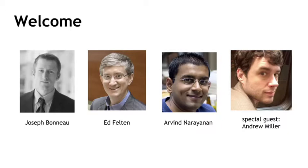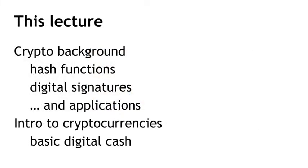There will be 11 lectures in total. In this lecture, number one, we're going to do two things. First, we'll introduce some cryptographic primitives that turn out to be necessary for talking about cryptocurrencies. In particular, we'll talk about cryptographic hashes and digital signatures, and some of the ways in which those are used to build cryptocurrencies.